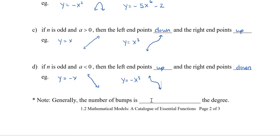Generally, the number of bumps in the graph is based on the exponent, and it's always going to be one less than the degree.